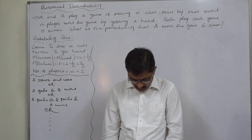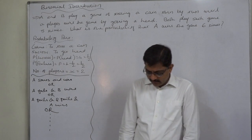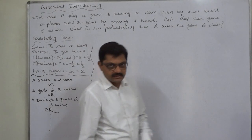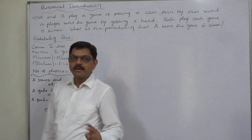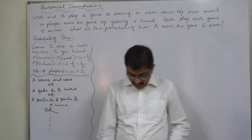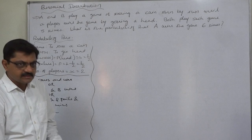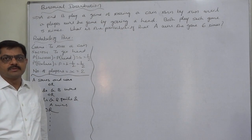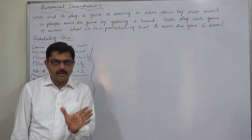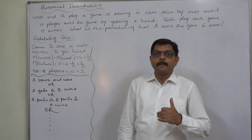The last two sentences — it was decided to play the game eight times, and what is the probability that A will win six times — these two sentences make this a problem of binomial distribution. The game is played eight times, so small n is eight. What is the probability that A will win exactly six times? That means out of eight trials, six successes. So what is P and Q?